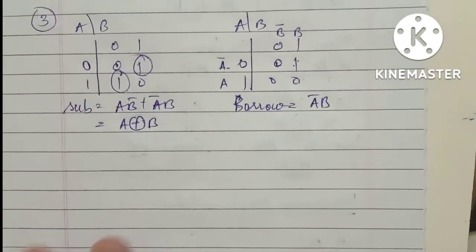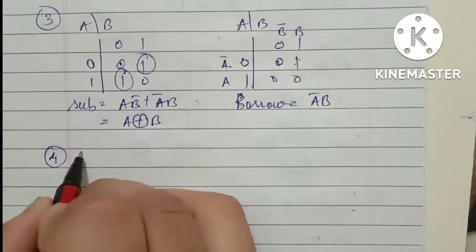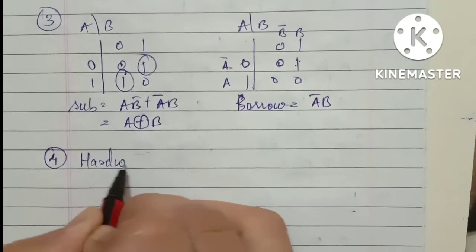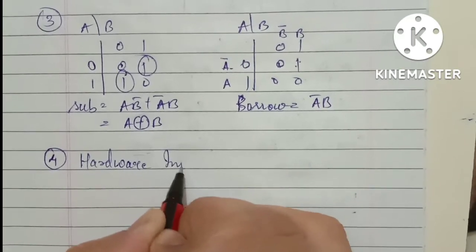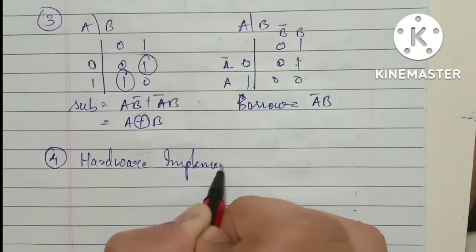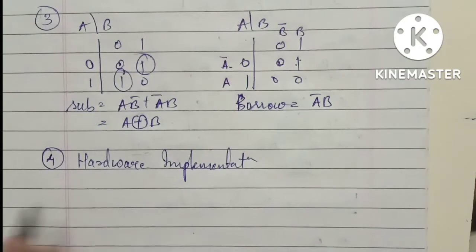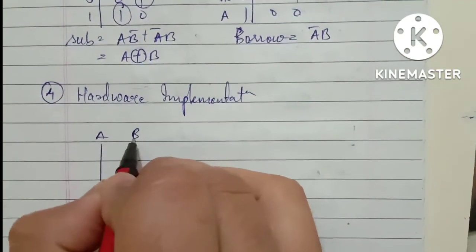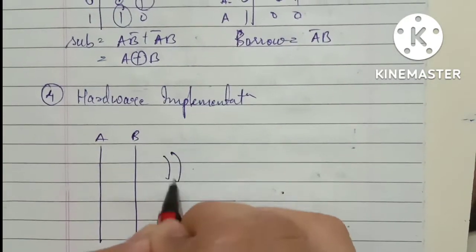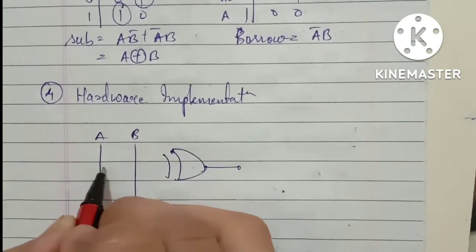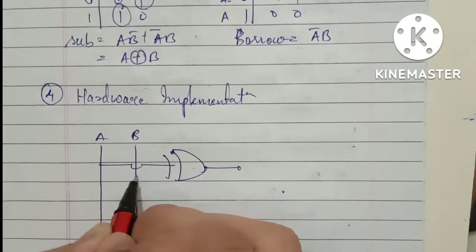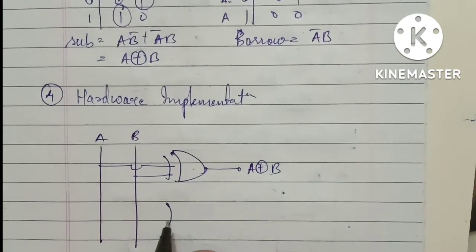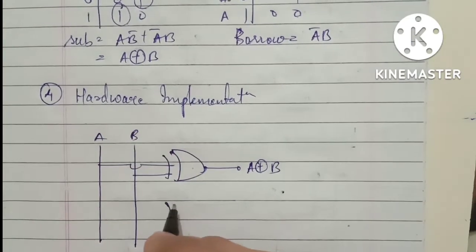Now we'll make a hardware implementation. Hardware implementation of circuit diagram. Same thing, two inputs you need to take. For two inputs, XOR gate will be required. A XOR B. This will provide you the subtraction. And now we need to take.